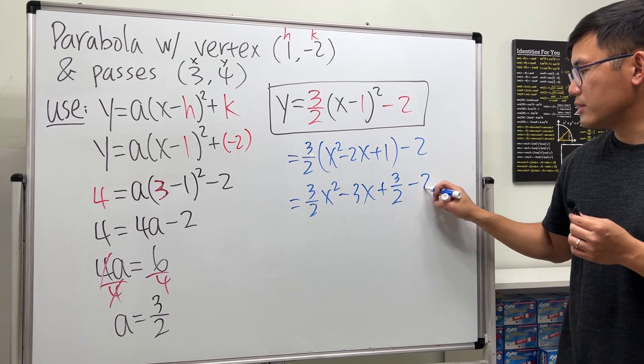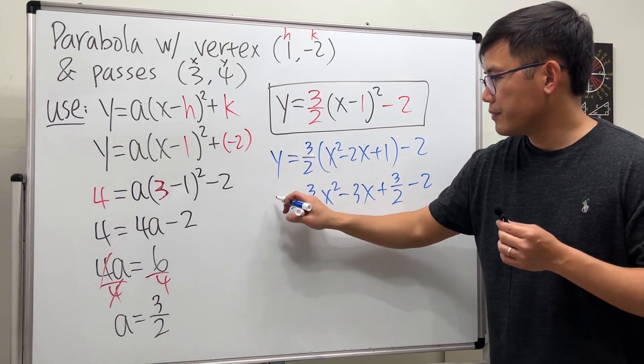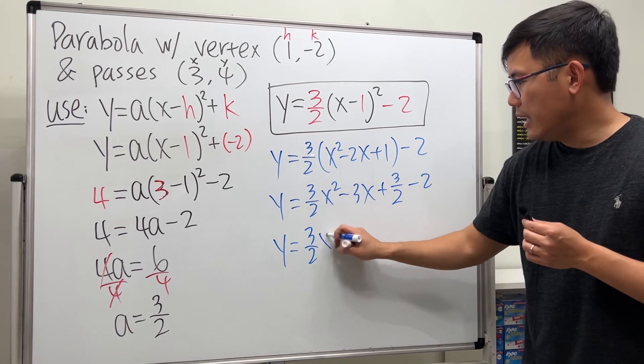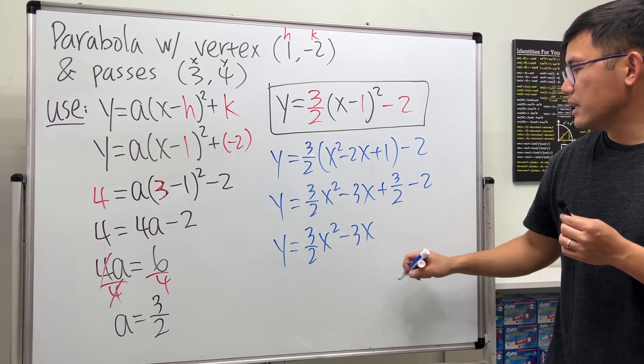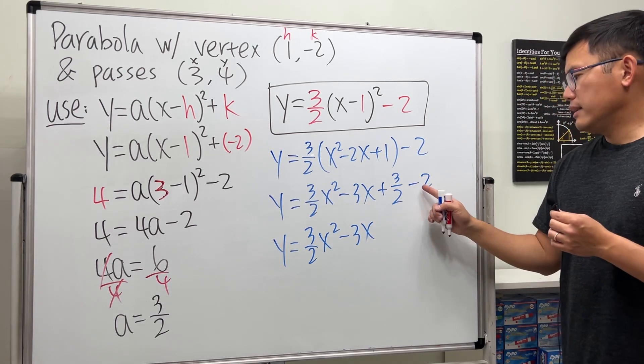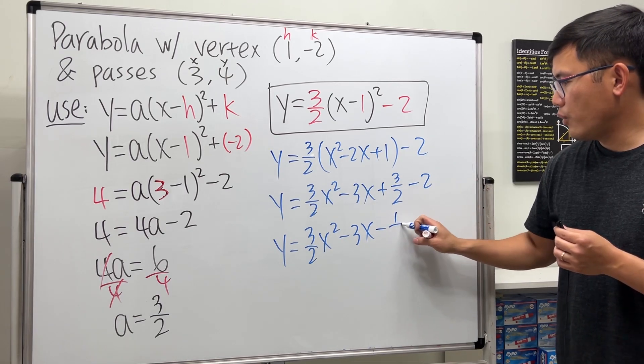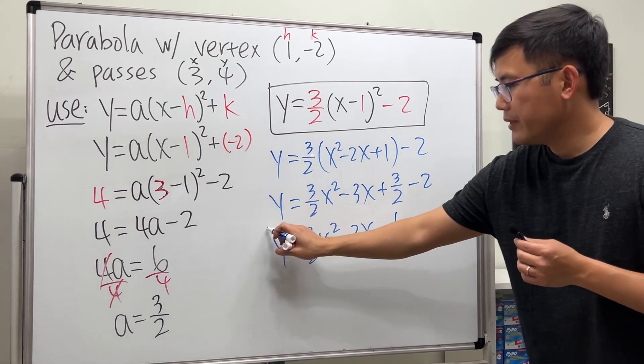And don't forget we still have to minus 2, right? And finally we have 3 over 2 x squared minus 3x. 3 over 2 minus 4 over 2, so all together we have minus 1 over 2. Yep, equation in the standard form.